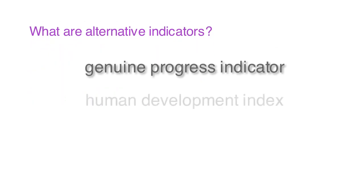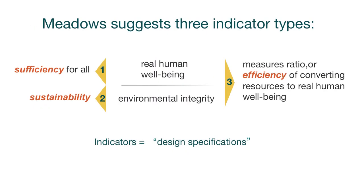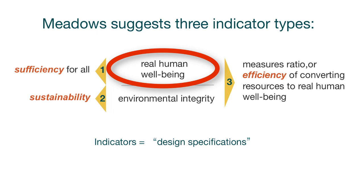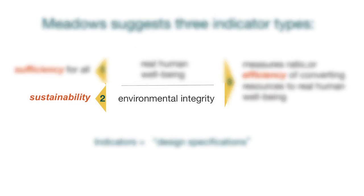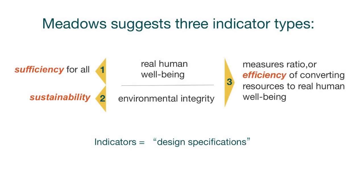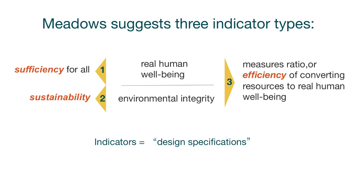Other indicators have recently been advocated to better account for real progress. These alternative indicators could possibly serve as indicators of real human well-being. Meadows suggested that the second indicator be an indicator of environmental integrity or sustainability of the environment. The third indicator suggested by Meadows was one that measured the ratio of sufficiency of well-being to environmental integrity, which could serve as an indicator of the efficiency of conversion of resources to well-being.